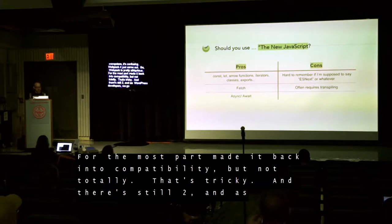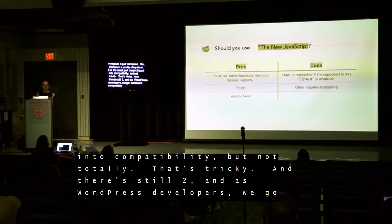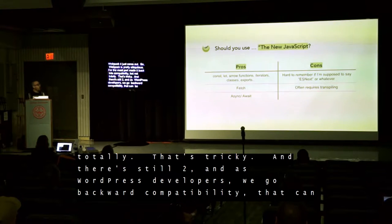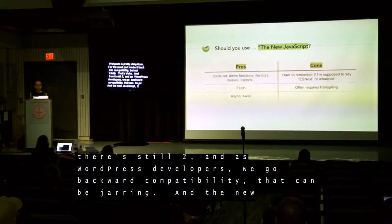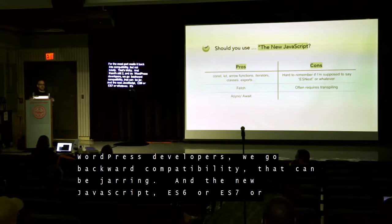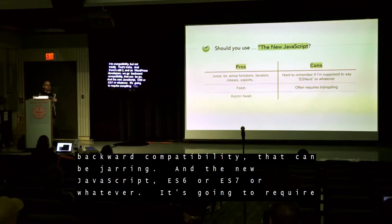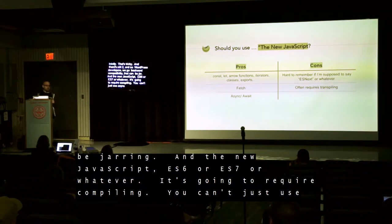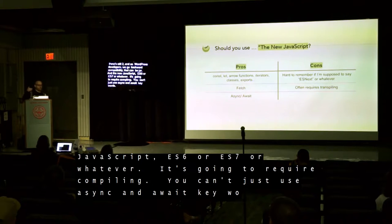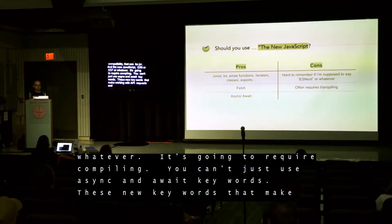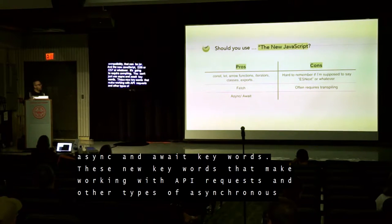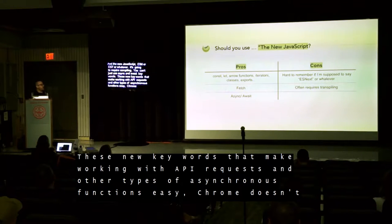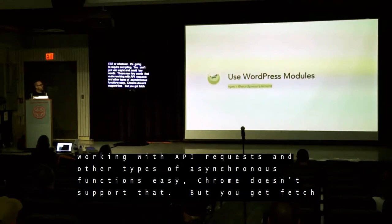The new JavaScript — I can't remember if I'm supposed to call it ESNext or ES6 or ES7 — is going to require compiling. You can't just use async and await keywords, which are the new keywords that make working with API requests and other types of asynchronous functions easy. Chrome doesn't support that, I don't think. But you can with Babel. You get things like fetch and async/await — new syntaxes that are just nice. All my code here is written using modern, latest JavaScript.